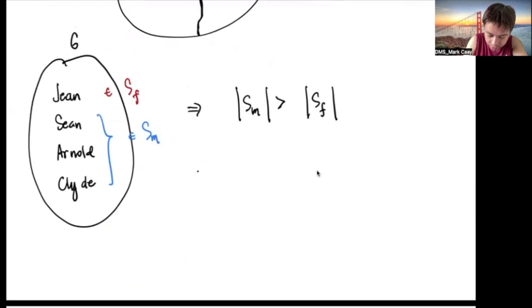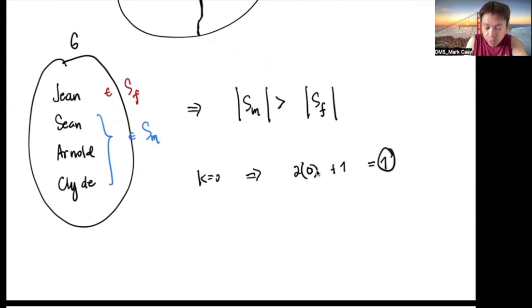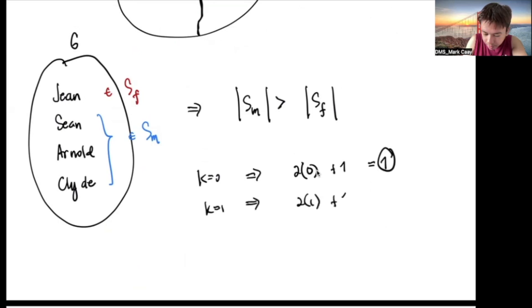When K is 0, you get 2(0)+1 = 1. When K is 1, you get 2(1)+1 = 3. So you have to answer questions 1 and 3.